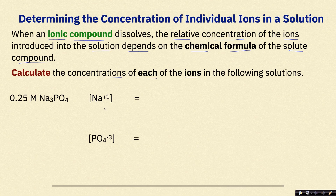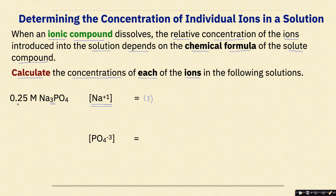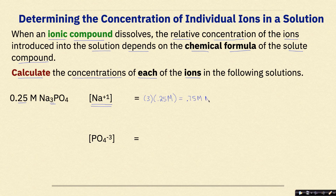If we dissolved Na3PO4 in water, what would the total concentration of just the sodium ions be? We have to recognize the subscript of 3 next to Na. So there are 3 moles of Na, and we multiply that by the total concentration of the entire compound, which is 0.25 molar. So the concentration of sodium ions is 3 times 0.25 molar, giving us a total concentration of 0.75 molar Na⁺.